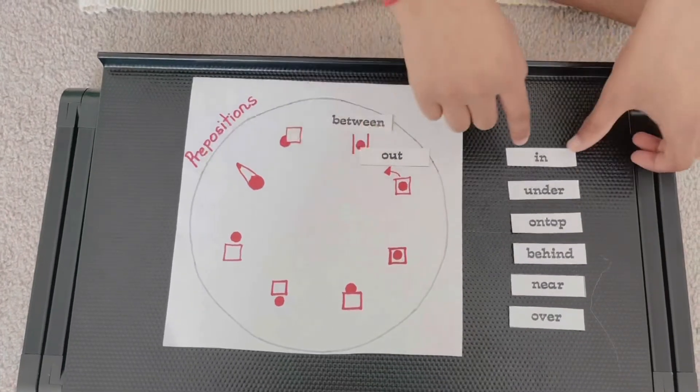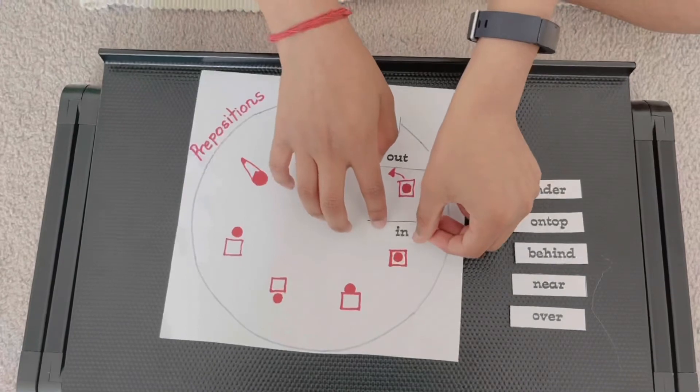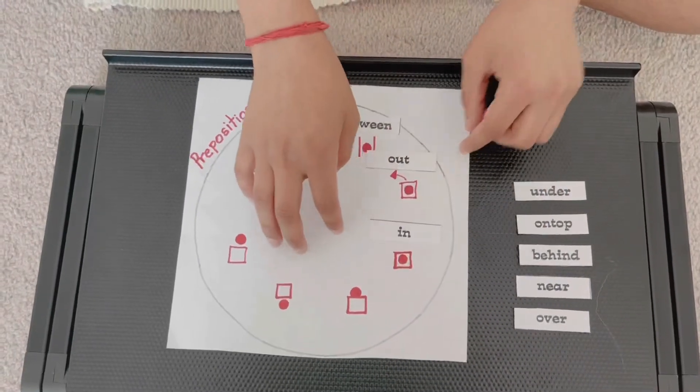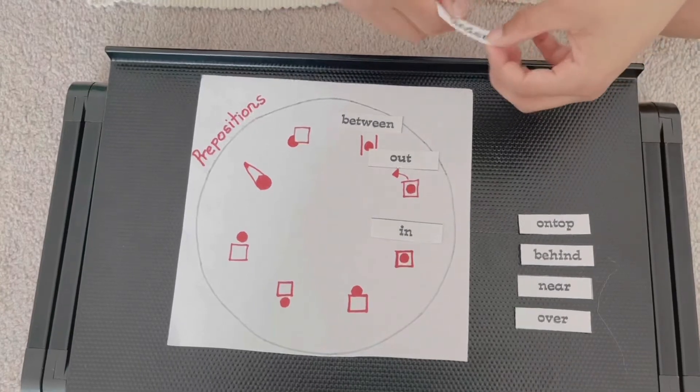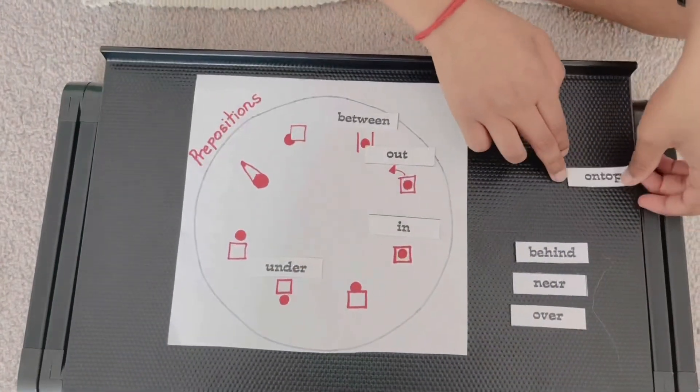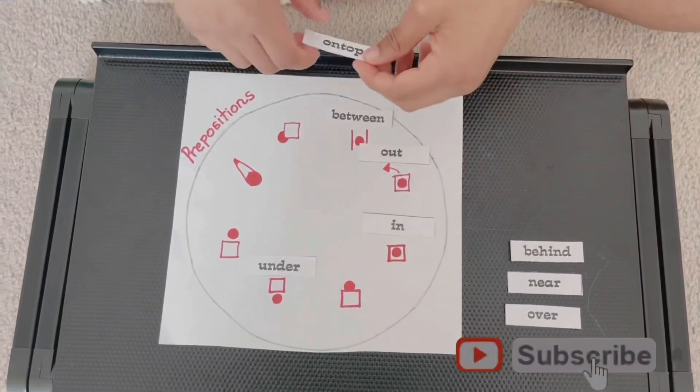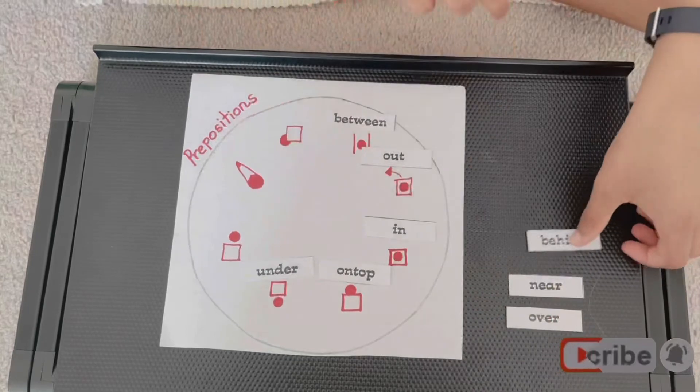Whoopsie daisy. In would be this one. The paper's moving. Under would be this one. On top will be this one. Behind.